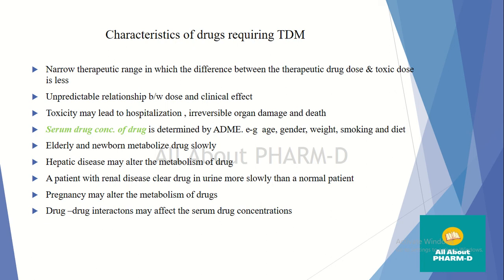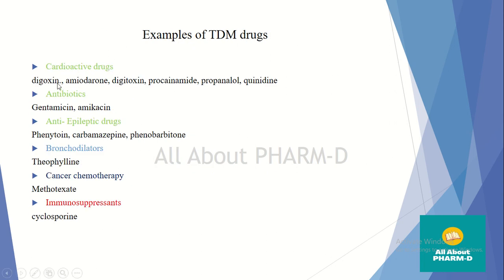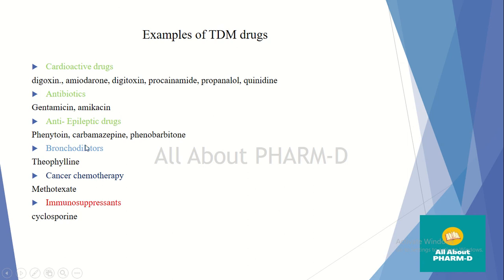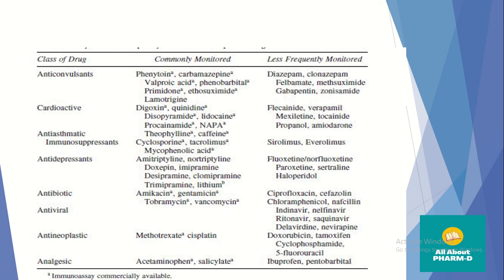Examples of drugs that require TDM include cardioactive drugs such as Digoxin, Procainamide, and Metoprolol; antibiotics such as Gentamicin and Amikacin; antiepileptic drugs such as Phenytoin and Carbamazepine; bronchodilators such as Theophylline; anticancer drugs such as Methotrexate; immunosuppressants such as Cyclosporine and Tacrolimus; antidepressants such as Amitriptyline, Doxepin, and Desipramine; antivirals; antineoplastics; and analgesics such as Acetaminophen and Salicylate. These drugs may cause toxicity if they go outside their therapeutic range.